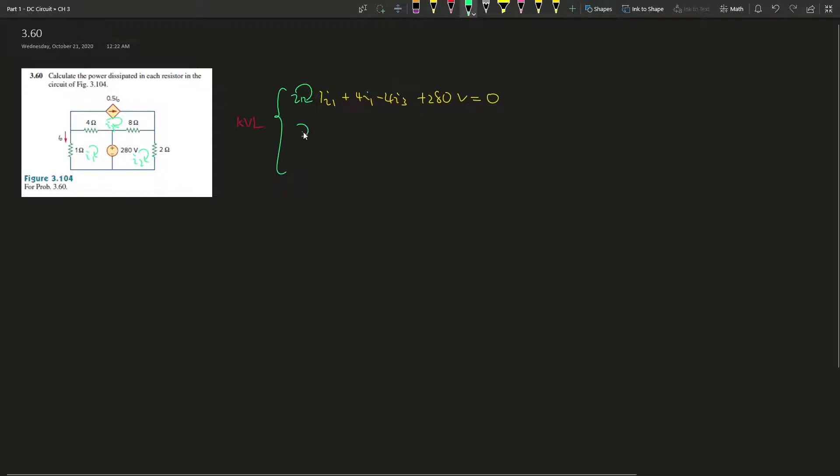Then we go on to I2 at the bottom right corner. That's gonna give us negative 280 volts plus 8I2 minus 8I3 plus 2I2 equals zero.